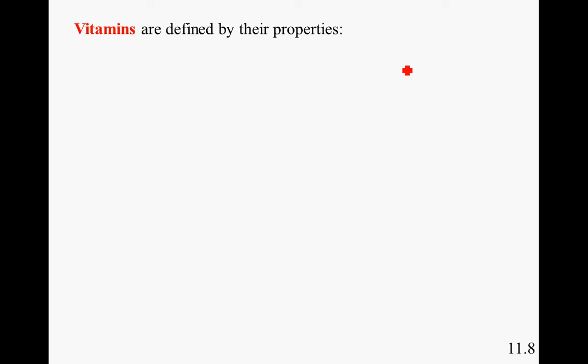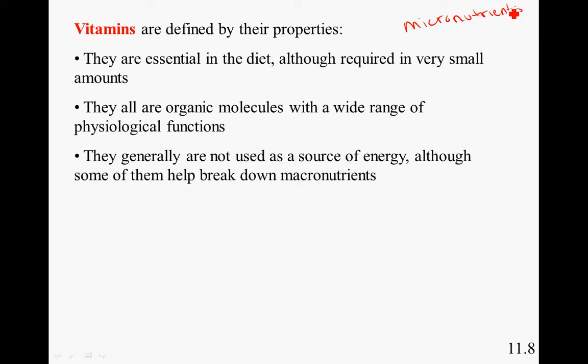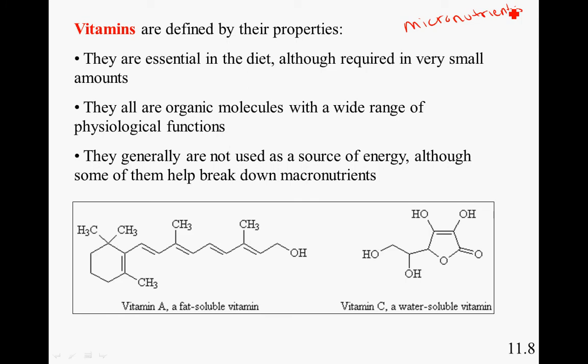Vitamins are considered micronutrients — substances that are needed in a miniscule amount but are still essential to life. They are needed for good health, proper metabolic functioning, and preventing disease. Vitamins are defined by their properties: they are essential in the diet, although required in very small amounts. They are organic molecules with a wide range of physiological functions, and generally are not used as a source of energy, although some of them help break down macronutrients. Examples include Vitamin A, which is fat soluble, and Vitamin C, which is water soluble.